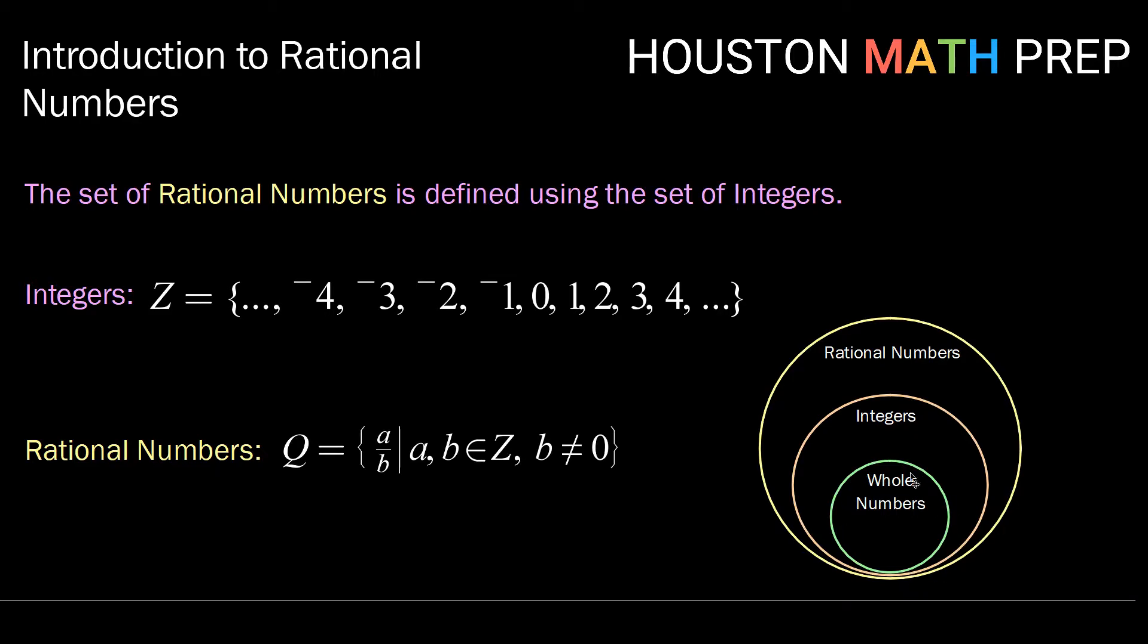within the integers we have the whole numbers. Remember that the whole numbers were the numbers zero, one, two, three, four, and so on, or our positive counting numbers including zero. Then we expanded to include the negatives and that gave us the integers. Now we're expanding a bit further to include anything that can be written as the quotient of two integers.